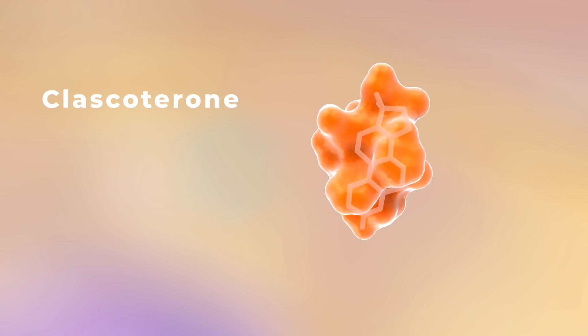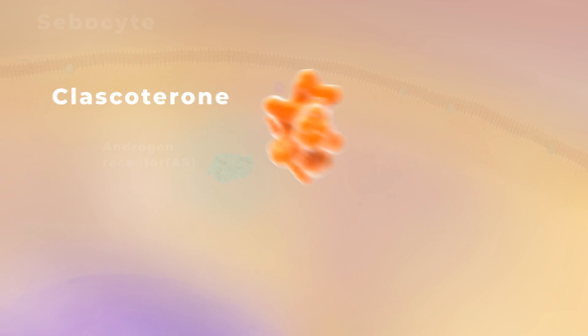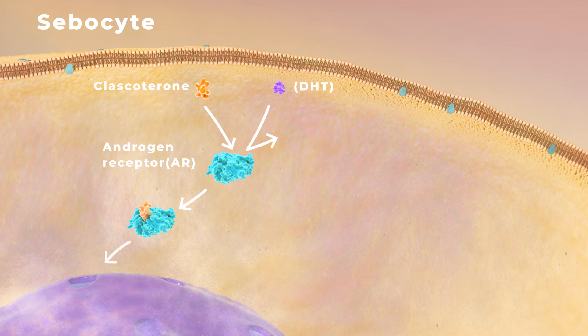Clascoterone competes with androgens, specifically DHT, for binding to androgen receptors, thereby blocking AR signaling cascades that promote acne pathogenesis.